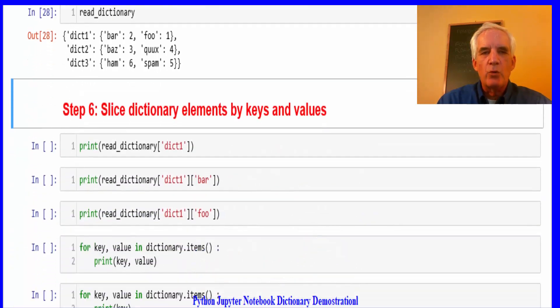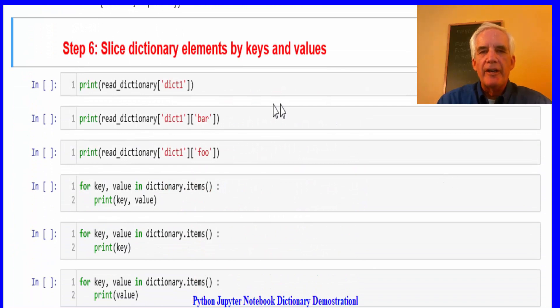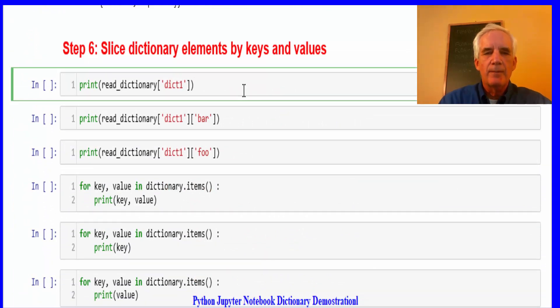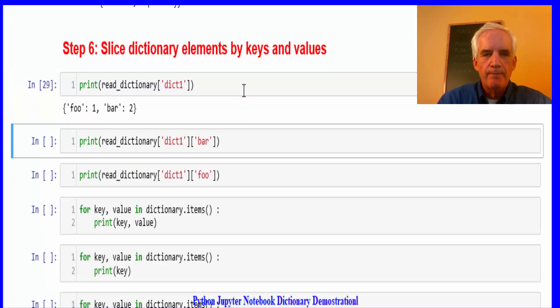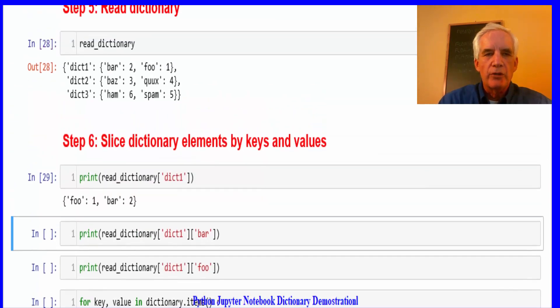Next, step six, we'll slice through the dictionary elements by keys and values, key-value pairs. And we'll start with the first dictionary. And we see it contains foo one, bar two. And we'll see that this was demonstrated up here.